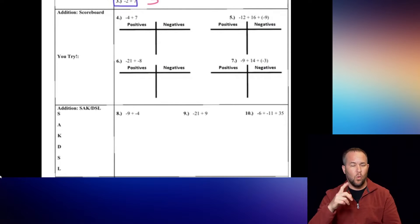The next example has a negative and a positive, so we use DSL — different signs, subtract. Always take the bigger number minus the smaller: 21 minus 9 gives us 12. Now determine the sign by looking at the larger number — 21 is larger and it was negative, so our final answer is negative 12.